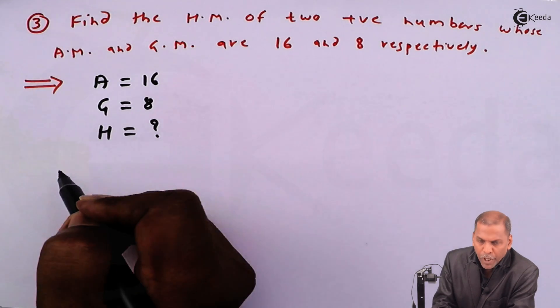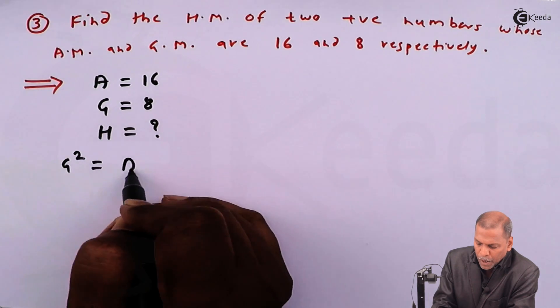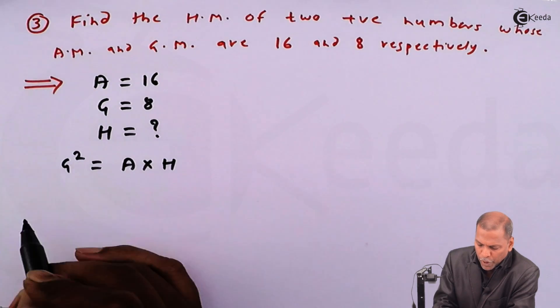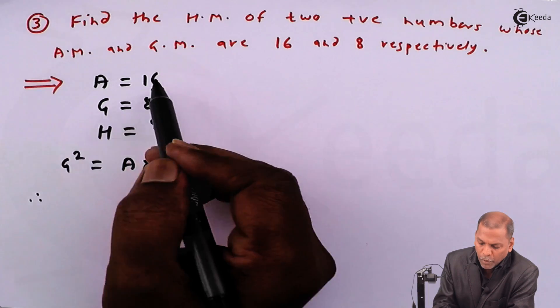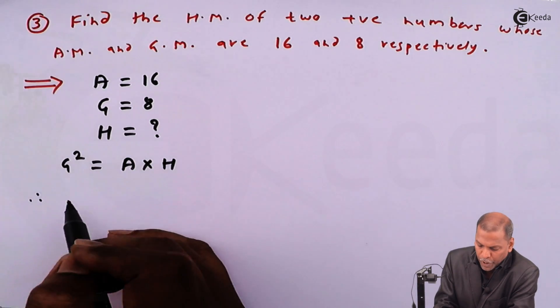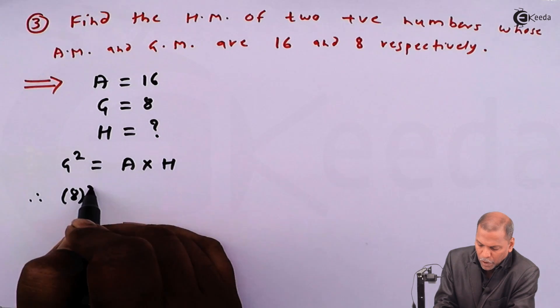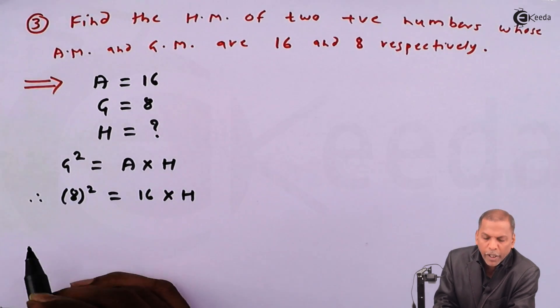Now we apply the formula that G squared is equal to A into H. Substituting the values A is equal to 16 and G equal to 8 in this equation, so we get 8 whole squared is equal to 16 into H.